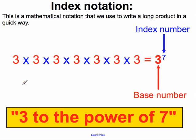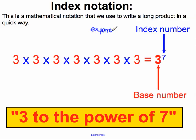Let's formalise this definition a bit more. Index notation, therefore, is the notation a mathematician uses to write a long product in a quicker way. In this example, three multiplied by itself seven times — three is called our base number. It's on the bottom. We're multiplying it by itself seven times, so seven is the smaller number that we call the index number. Mathematicians also sometimes call this the exponent. And they would say three to the power of seven.